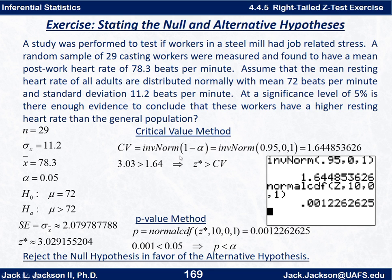For the critical value method: since this is a right-tailed test, the entire critical area (probability = α) is in the right tail. That means there is 1 − α to the left of the critical value, so the critical value is invNorm(1 − α) = invNorm(0.95) ≈ 1.6449. Our z-star, rounded to two decimal places, is about 3.03, which is clearly greater than the critical value of 1.64. Since z-star is greater than the critical value in a right-tailed test, we reject the null hypothesis.